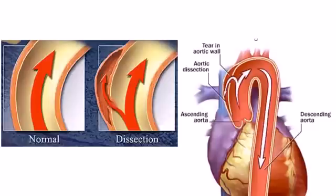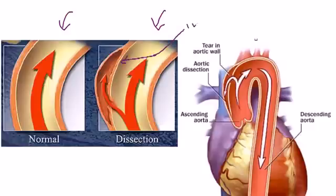This part shows a completely normal aorta. The red arrow is referring to the direction of blood flow. The dissection is referring to a small tear that happens here in the intima, which is the innermost layer of the wall of the aorta.